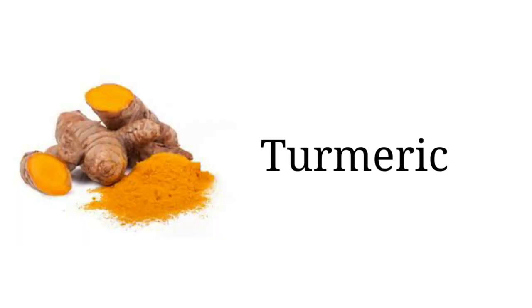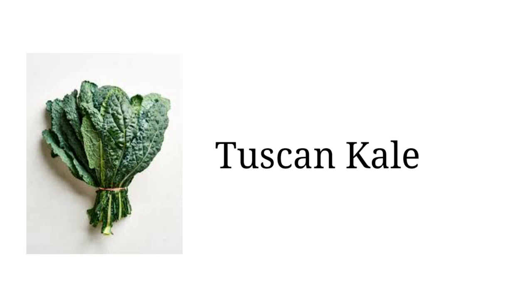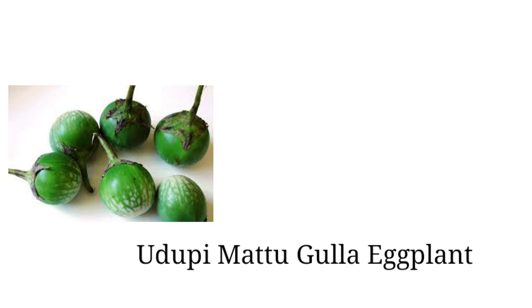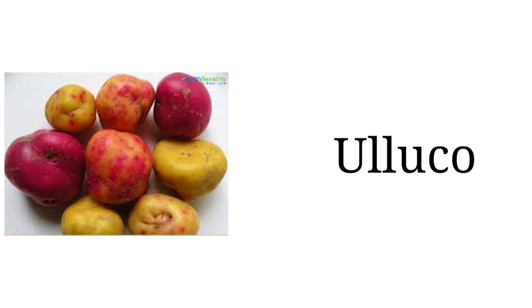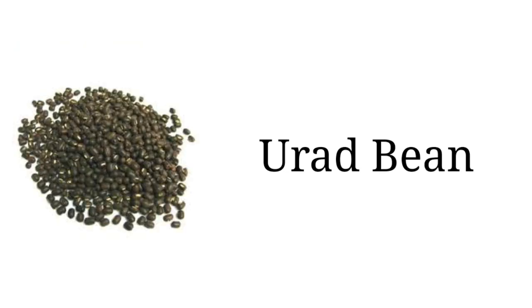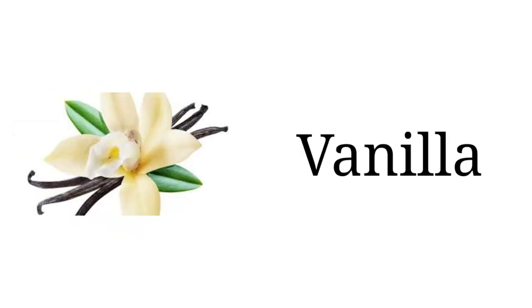Turmeric. Turnip. Tuscan kale. Uob. Udipi matu gulla eggplant. Ulluco. Upland cress. Urad bean. Vanilla.